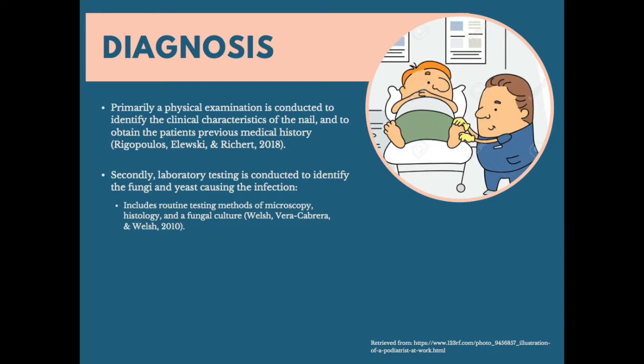When diagnosing onychomycosis it is important to appropriately identify whether the patient has onychomycosis, as other diseases can mimic the same symptoms, for example psoriasis. For appropriate diagnosis a two-step process is required: firstly a physical examination which identifies the clinical characteristics of the nail and the patient's previous medical history; the second step consists of laboratory tests which include routine testing methods of microscopy, histology and a fungal culture.